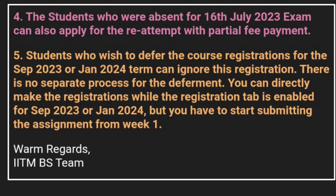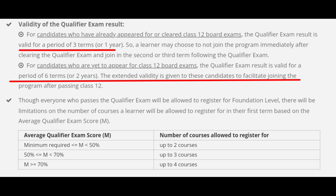Students who wish to defer their course registration to the September or Jan 2024 term can ignore these registrations. There is no separate process for deferment. You can directly make the registration when the registration tab is enabled for the September or Jan 2024 term, but you have to start submitting assignments from week 1. Another common doubt is for how long the qualifier score is valid. The answer is your score is valid for three terms: May 2023, September 2023 and Jan 2024.